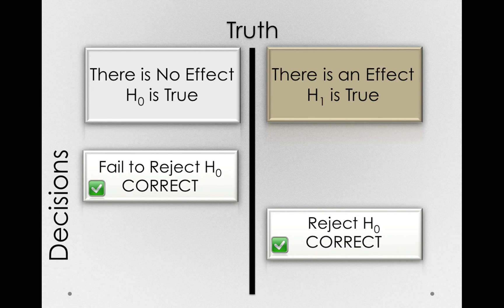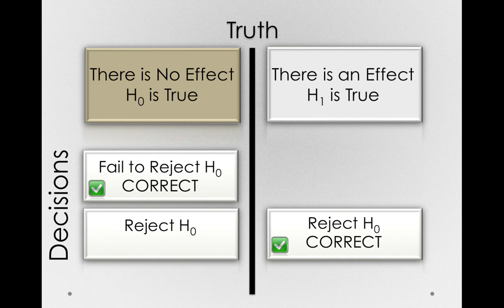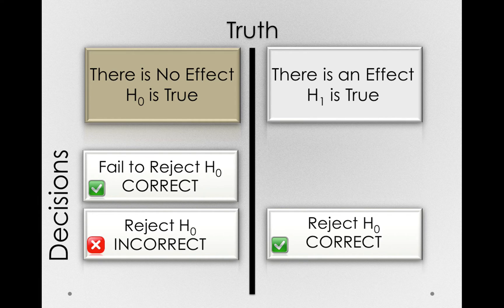There are two types of errors we have to deal with. Let's go back to the state of the world where there is no effect. If we reject the null hypothesis — and remember, rejecting the null hypothesis is saying that we don't think the null hypothesis is a reasonable explanation because of the sample data we got — this is an incorrect decision. We're claiming to the world the null is not true, or at least is not a good explanation for the outcome we observed, but this is a world where the null is true. So we happened to get a sample that led us astray.